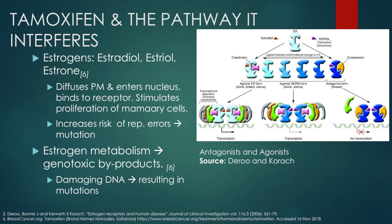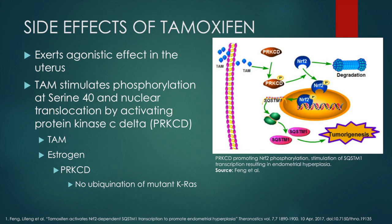While tamoxifen has some desirable side effects, like preventing bone loss by inhibiting osteoclast activity, others may be quite undesirable, like an increased risk of deep vein thrombosis, pulmonary embolisms, fatty liver, and reduced cognition, to name some. But the most concerning of all is the fact that it can cause endometrial cancer. As I pointed out earlier, while tamoxifen is an antagonist in breast tissue, it can act as an agonist somewhere else.